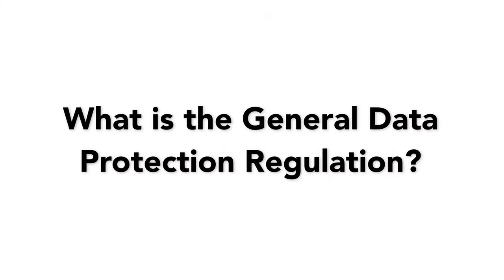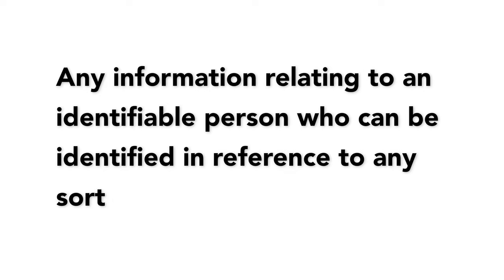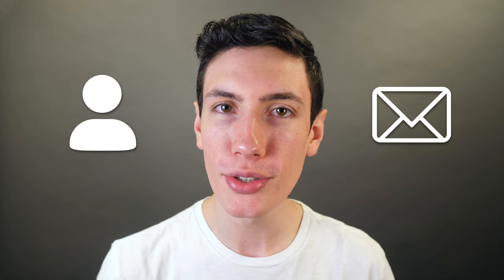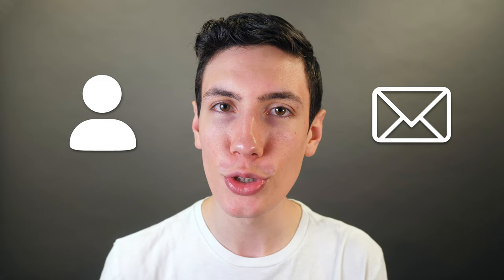Now that we've gone over these terms, let's get into the meat of what the General Data Protection Regulation is. Personal data under the GDPR includes any information relating to an identifiable person who can be identified in reference to any sort of identifier. For your website or apps, this means you have to consider how you collect and store personal identifying details such as names and email addresses, but also things such as user IP addresses and device IDs.